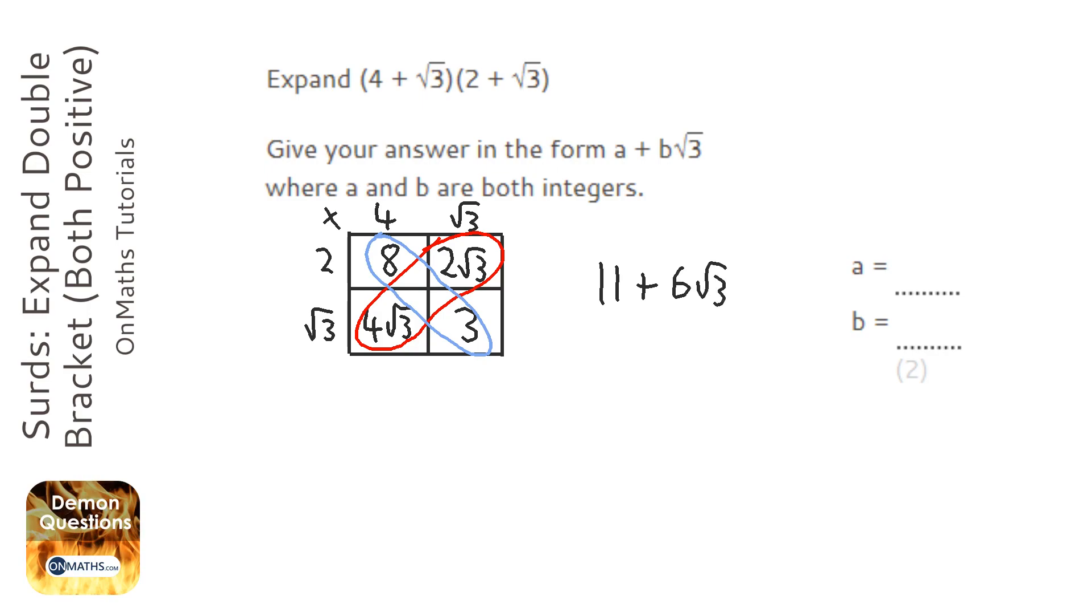So a is 11, and b the number before the root 3 is 6.